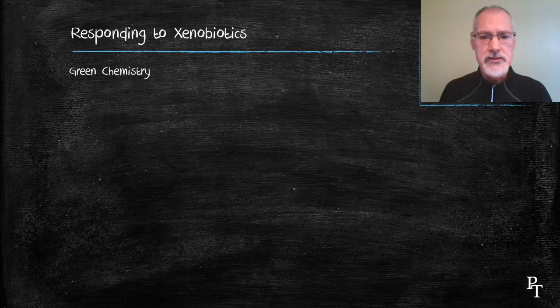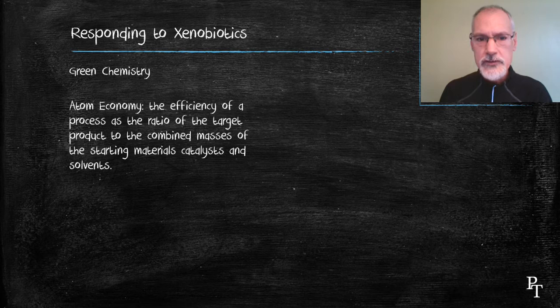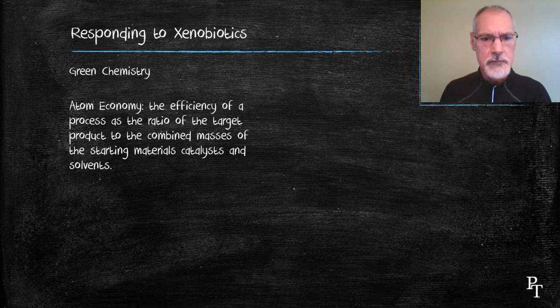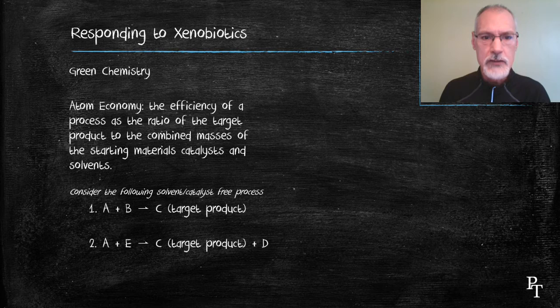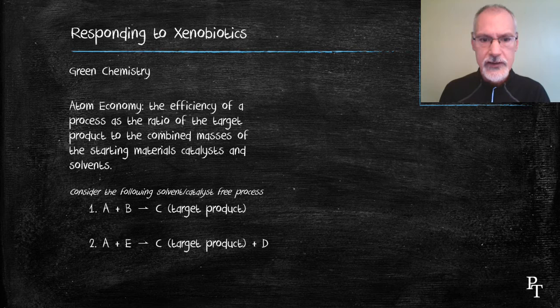And lastly, we can look at the use of a concept of green chemistry and in particular something called the atom economy, which is we look at an industrial process and evaluate its efficiency. And here's what I mean by that. Let's look at two processes that are manufacturing a product that we want, substance C. In case number one, I mix molecule A with molecule B. I'm not going to use any solvents or catalysts in this particular process. And my efficiency then would be the mass of substance C over the mass of my reactants.